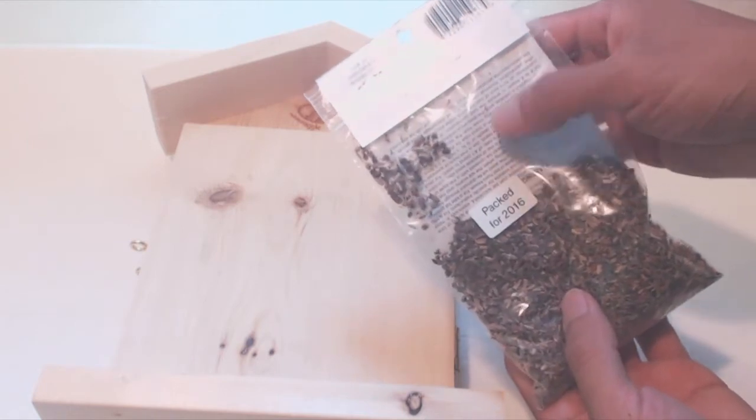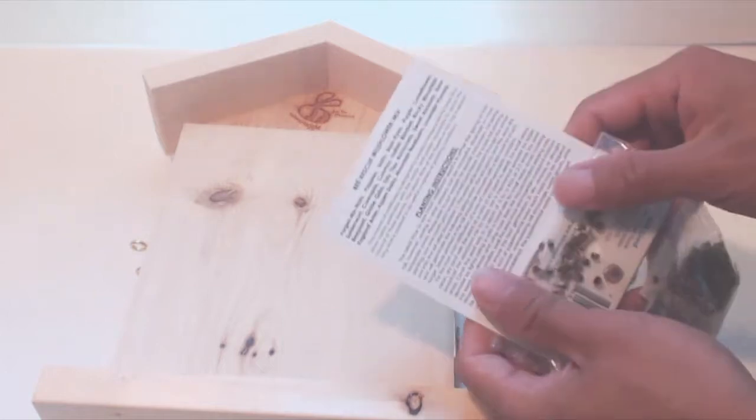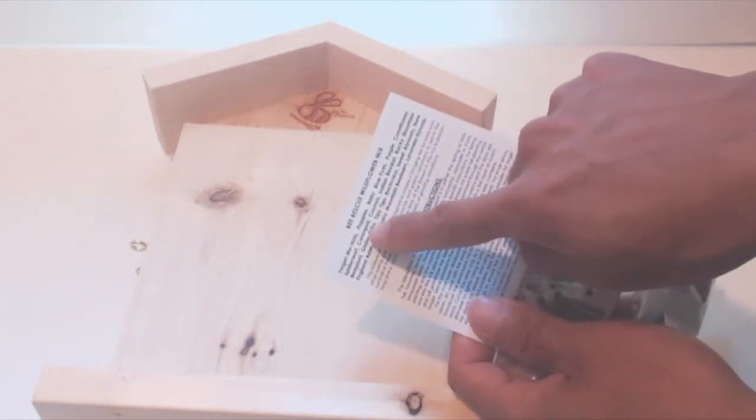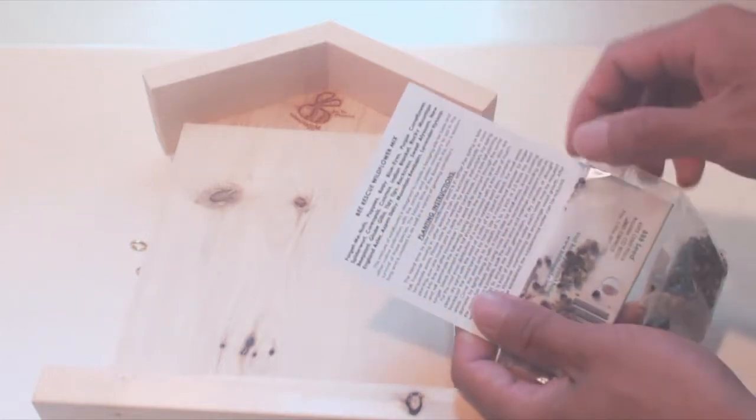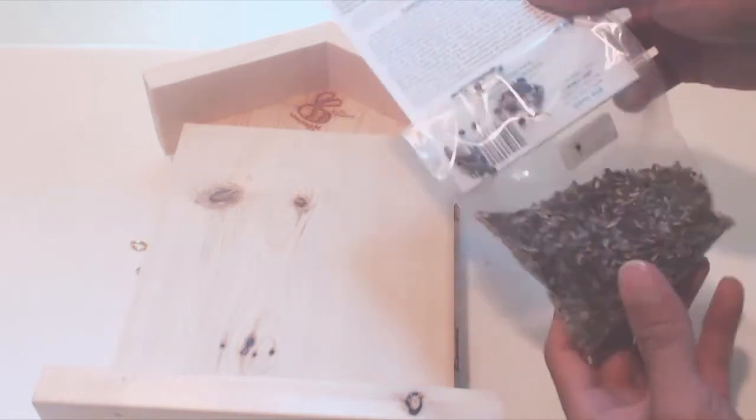Here you can see that it's packed for the current year and you can sow these in spring or late fall for best results. Some of the flowers included are forget-me-nots, purple coneflower, spiderwort, Rocky Mountain Bee Plant, Sweet Alyssum, Aspen Daisy, and Lavender Hyssop.